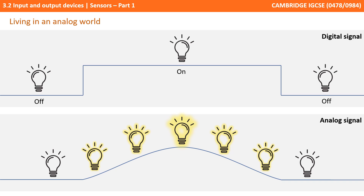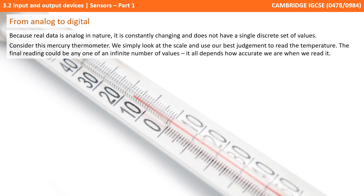Digital systems, such as computing devices, don't operate like this. In our digital representation, this light exists in one of two binary states, either on or off, and it switches instantly between them, as shown here. As real data is analogue in nature, it's constantly changing, and it does not have a single discrete set of values.